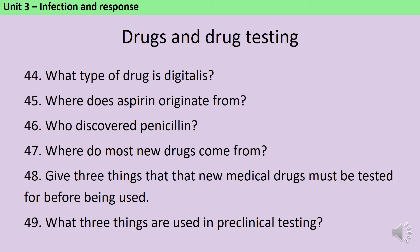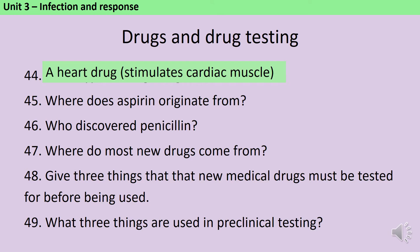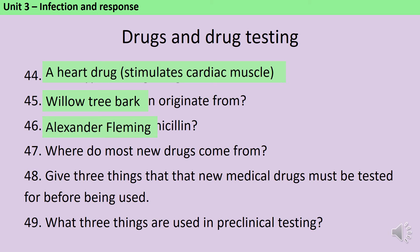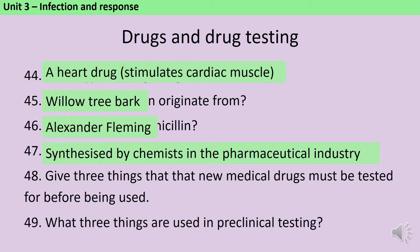Digitalis is a heart drug which stimulates the cardiac muscle and it's originally derived from foxgloves. Aspirin comes from willow tree bark, which people used to chew as a painkiller in the days before easy access to doctors. Penicillin was discovered by Alexander Fleming when he managed to isolate it from the penicillium fungus. Nowadays most new drugs are synthesized by chemists in the pharmaceutical industry, but often the ideas for them come from plants.